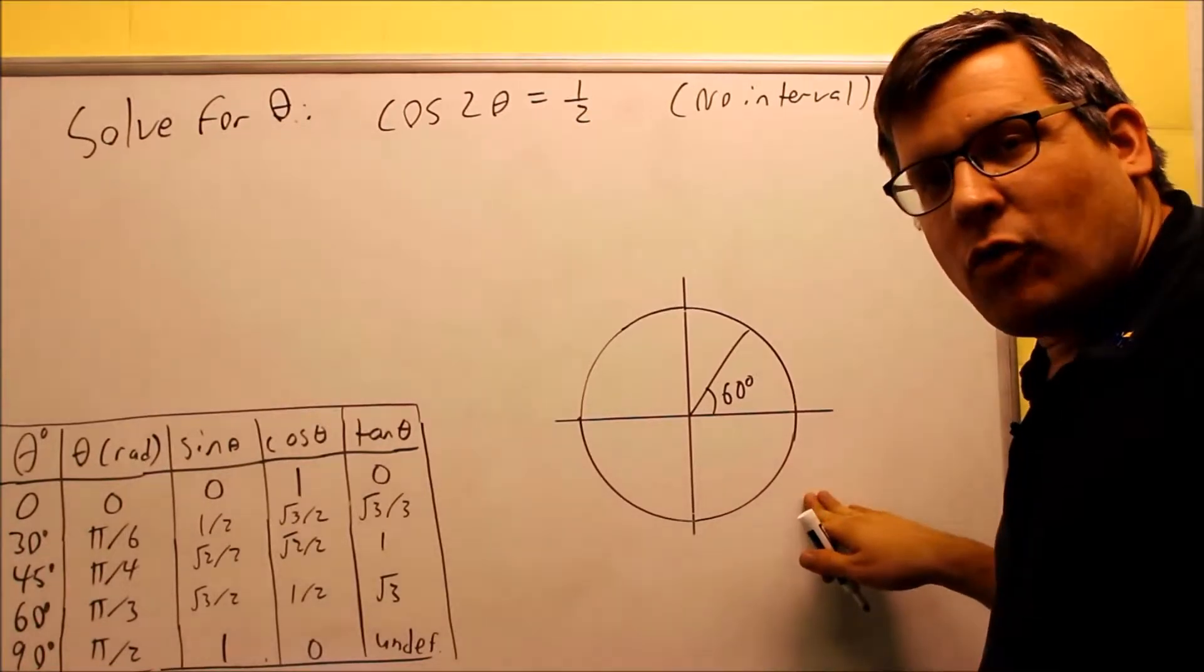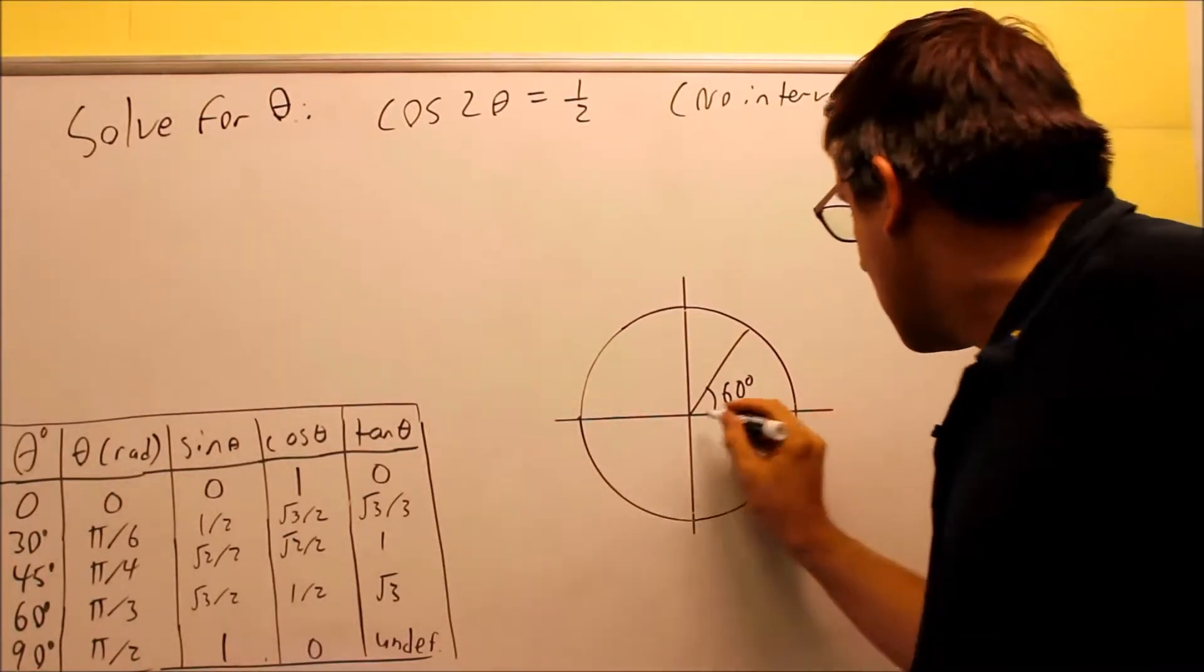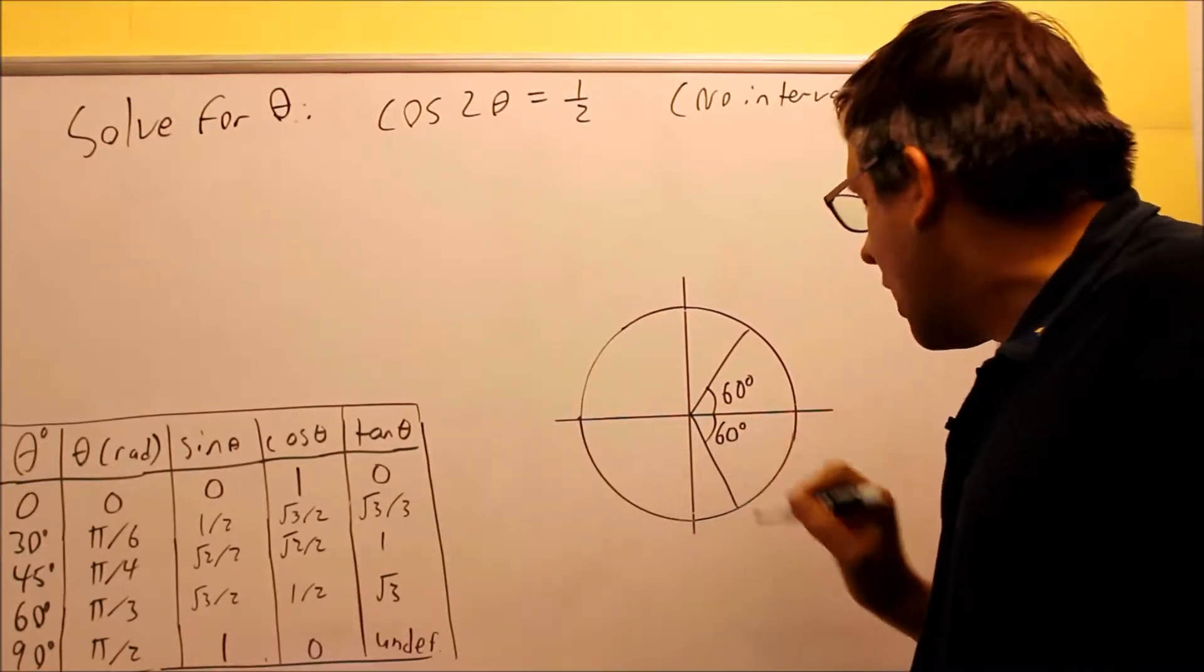And that's going to be down here in the fourth quadrant. And all students take calculus, cosine is positive down here, that means I'm going to have another answer down below here, that's going to be 60 degrees.